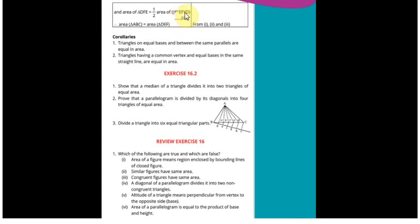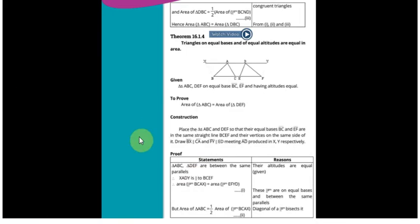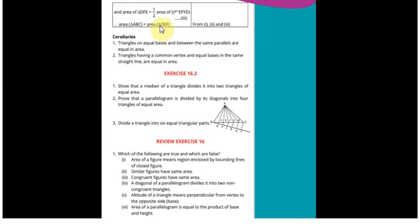Lekin us se pehle first result mein hum ne kaha tha ke yeh dono parallelograms equal hain. In dono parallelograms ke equal hone ki wajah se chunke ABC half hai us parallelogram ka aur isi tarah se DEF jo hai wo doosri parallelogram ka half hai aur dono parallelograms equal hain. So these two triangles are also equal according to these three results. Area of triangle ABC is equal to area of triangle DEF.